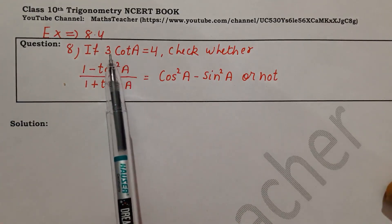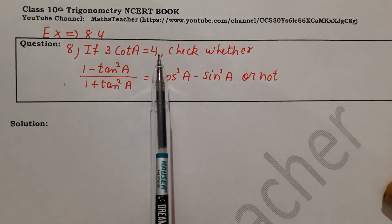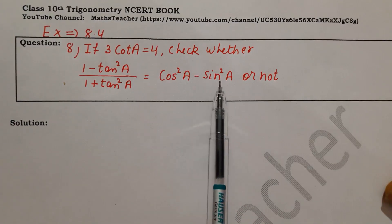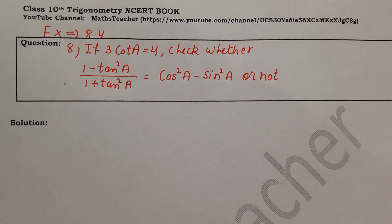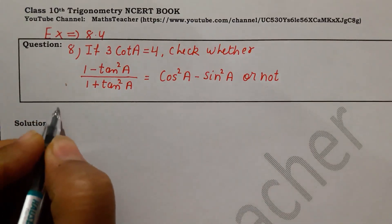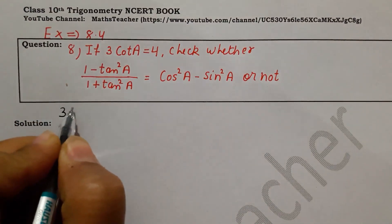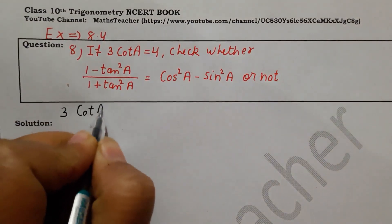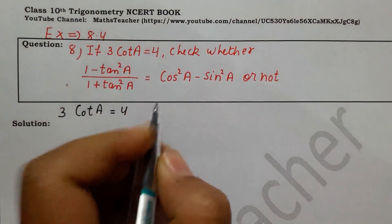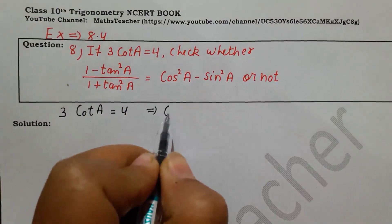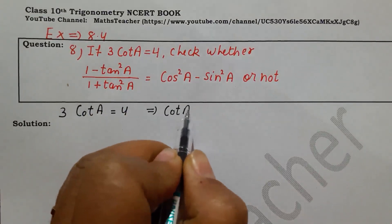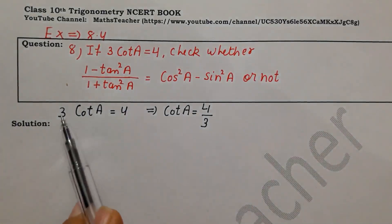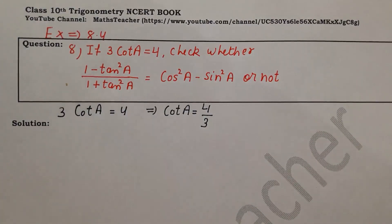The hint given is that if 3 cot A is equal to 4, we have to prove that left hand side and right hand side are equal or not. We start from the given: 3 cot A equals 4, so cot A equals 4 by 3.